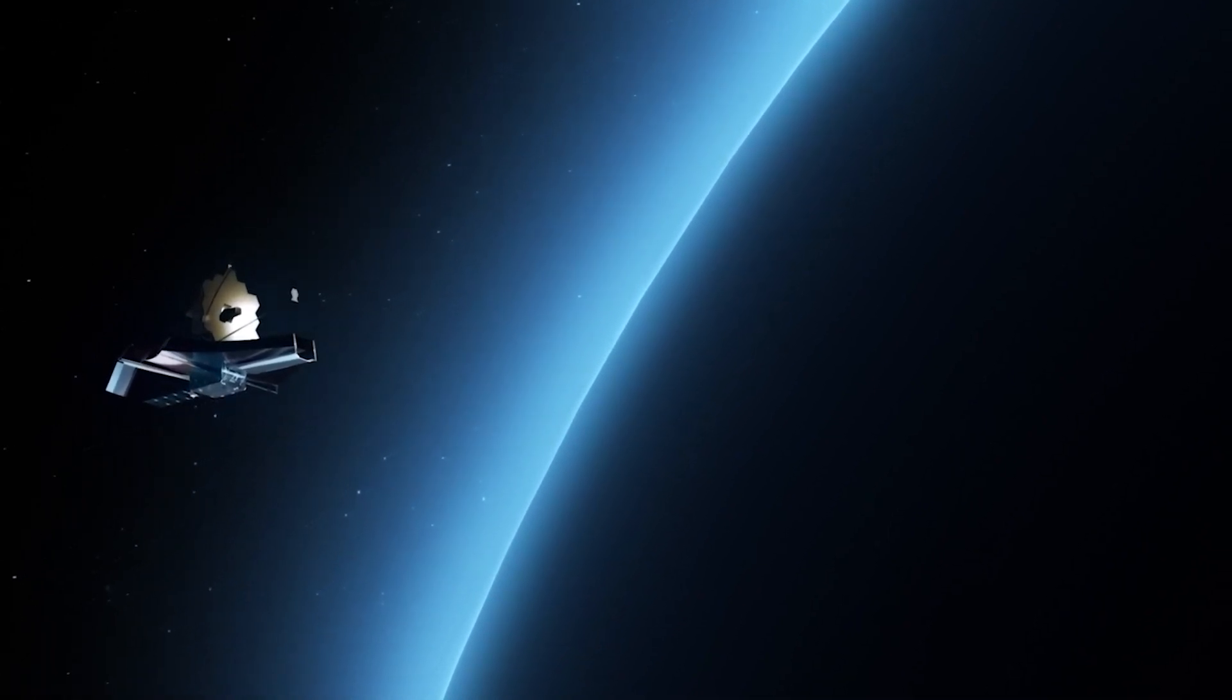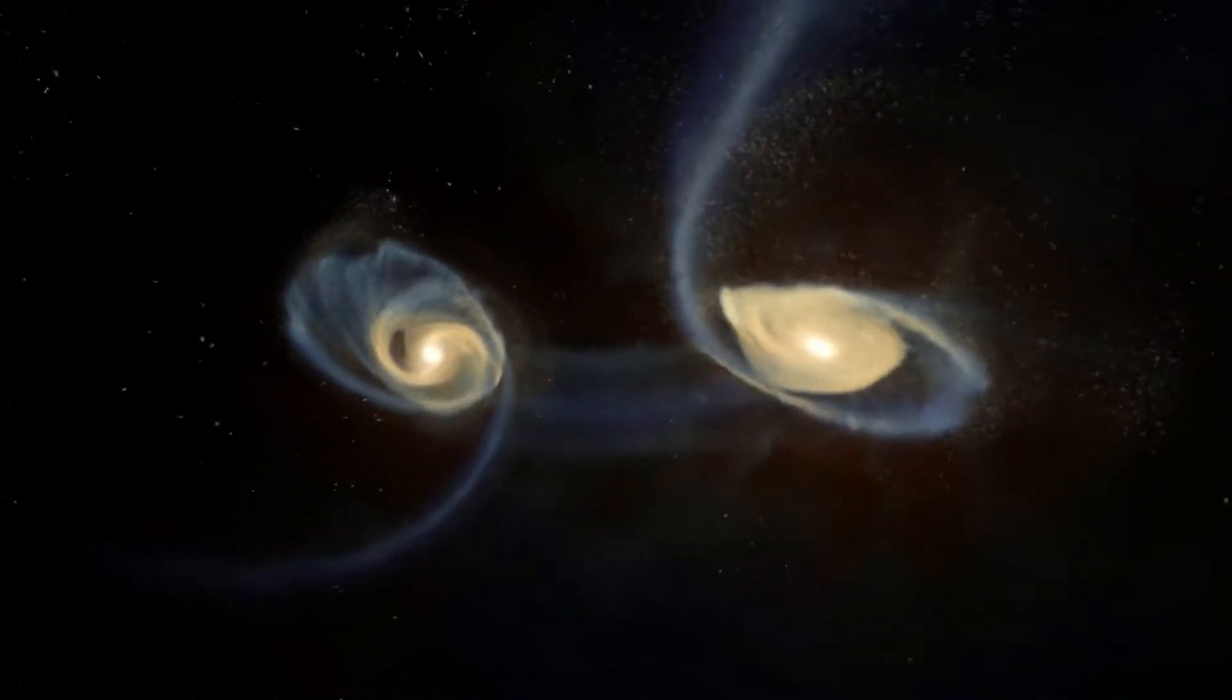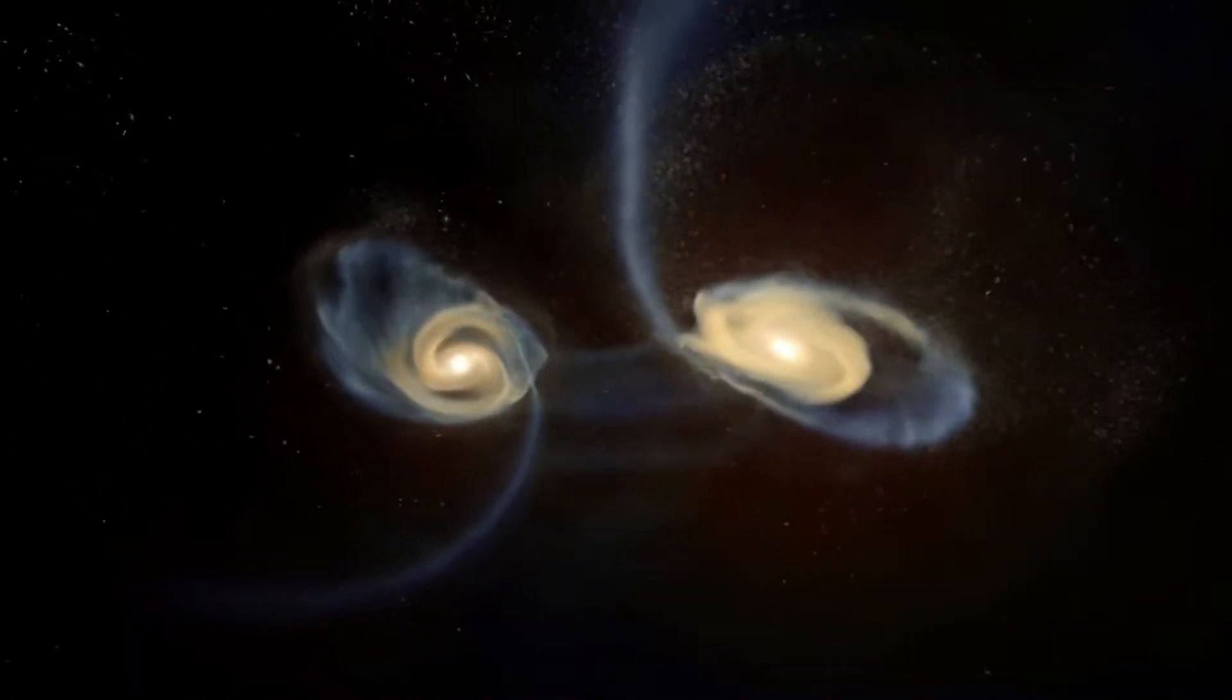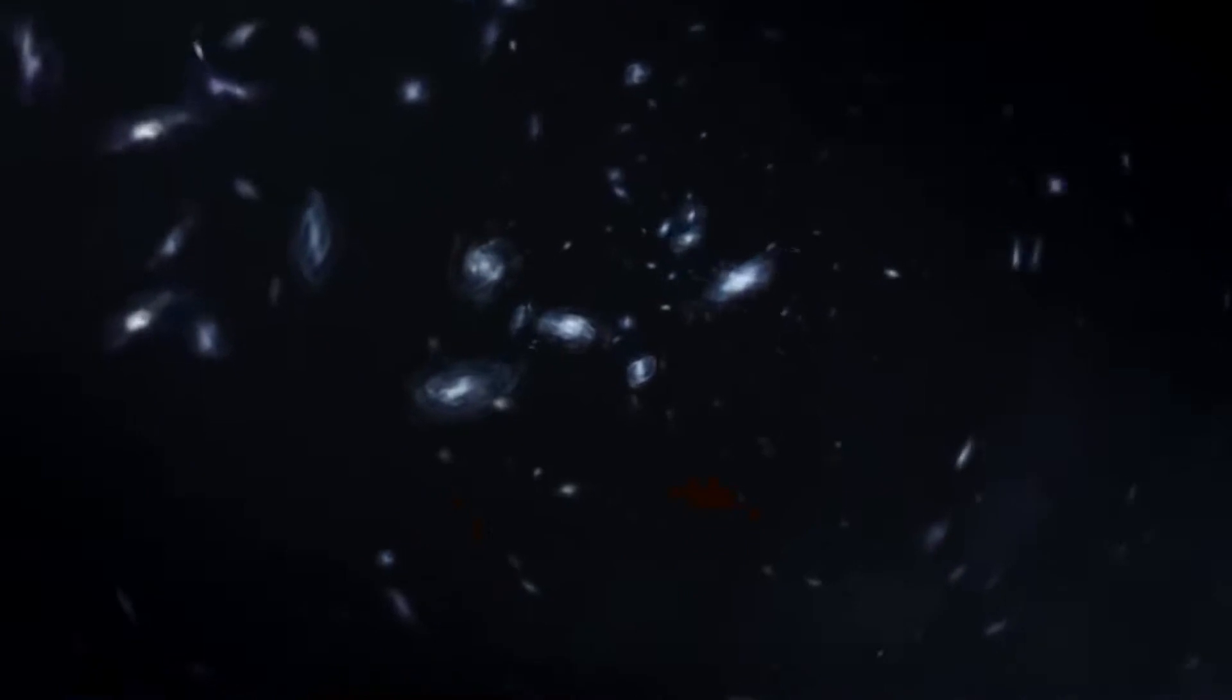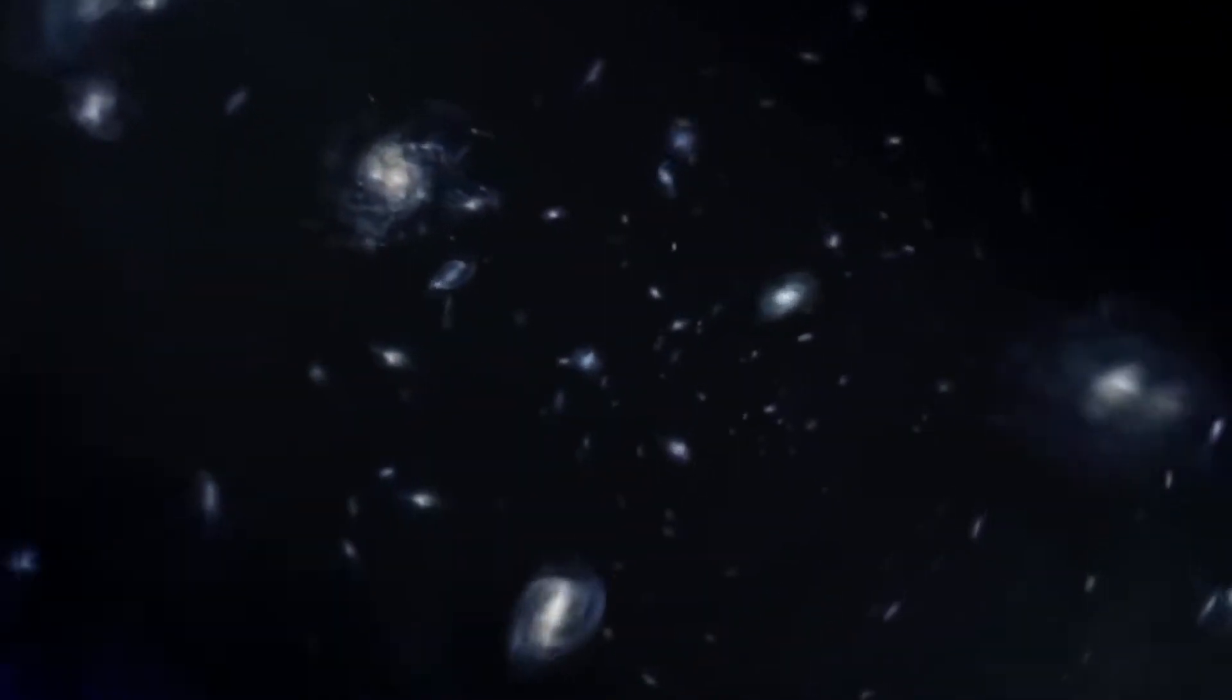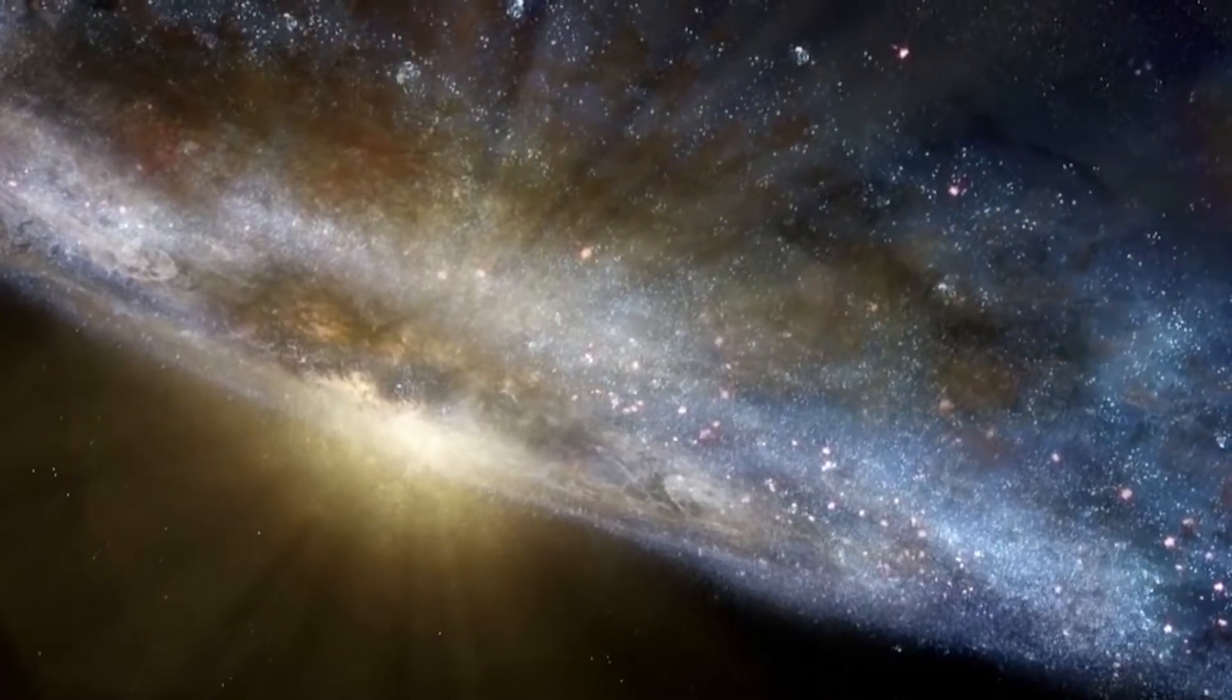One study of the JWST's initial deep field image discovered a slew of distant galaxies with disk-like features. Scientists have concluded from Hubble data that close galaxies, such as the Milky Way, have structured patterns like disks, but distant galaxies have more uneven structures.